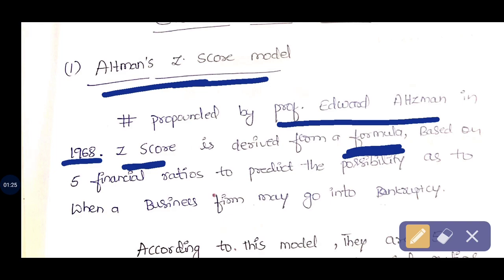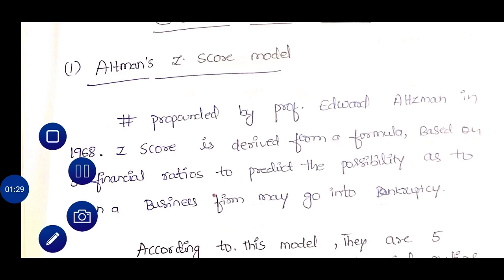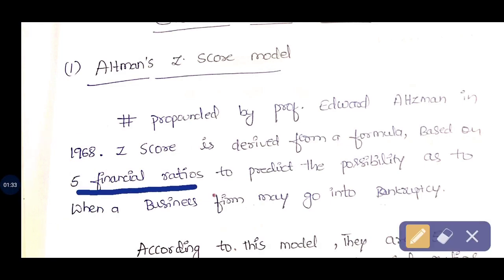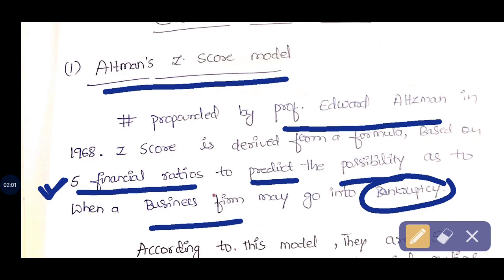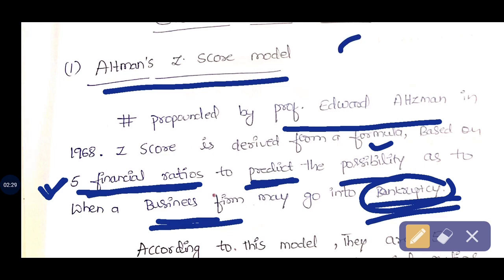This model is basically established on five financial ratios. These five financial factors will help us in predicting the possibility as to when a business firm may go into bankruptcy. According to this model, if we calculate these five financial ratios, we can predict whether the business will go into bankruptcy — that is, insolvency — or it will be in the safer zone.